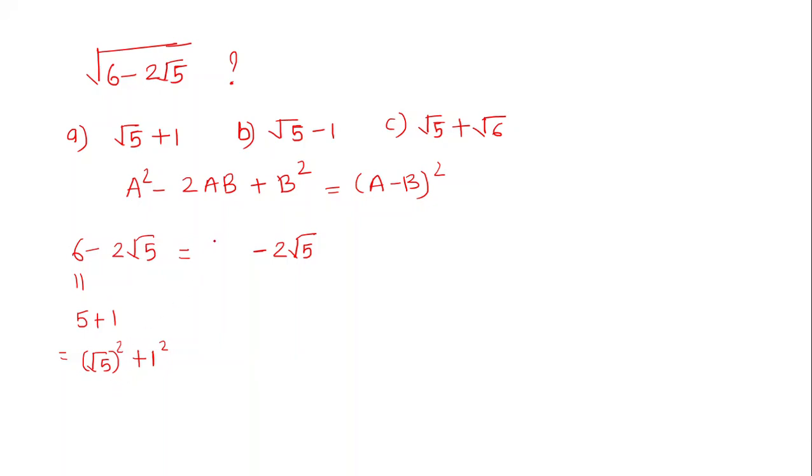So both are now the same. That equals (√5)², which is our a², minus 2 into a into b, which will be 1, plus b² will be 1².